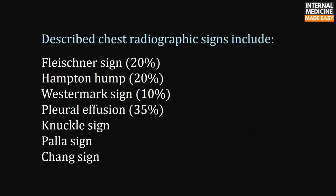The described chest radiographic signs include the Fleischner sign, Hampton Hump, Westermark sign, pleural effusion, Knuckle sign, Palla sign, and Chang sign.